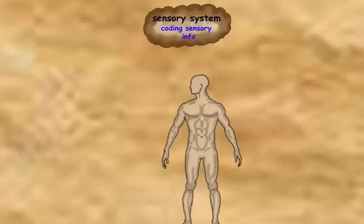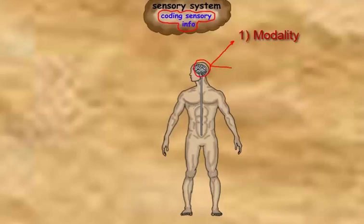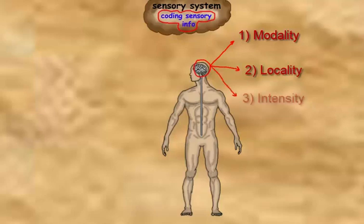Coding of sensory information is done for the purpose of raising awareness about an internal or external stimulus. Coding is possible even though all signals coming to the cortex arrive in the form of action potentials. The process of coding enables the sensory cortex to discriminate between the modality or type of sensation, locality or site, and the strength or intensity of the stimulation.